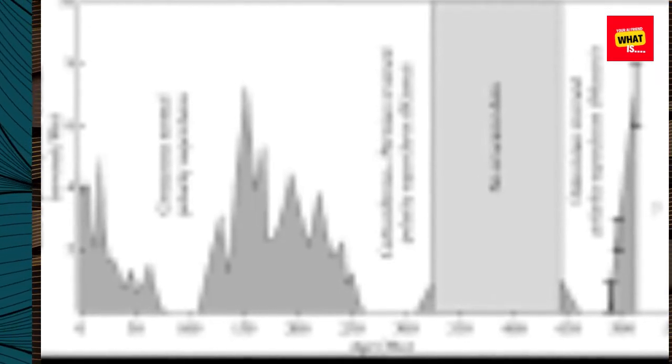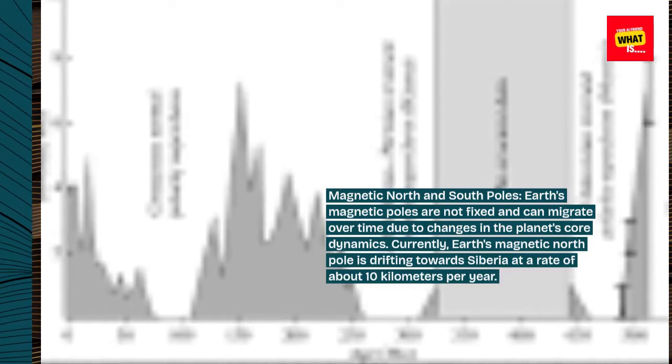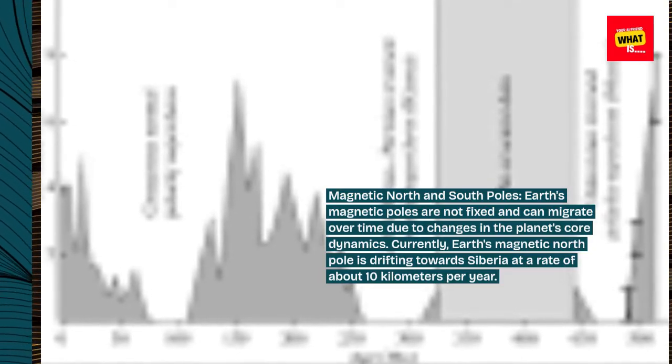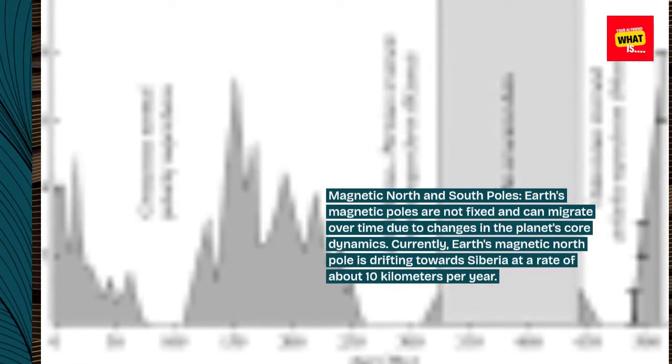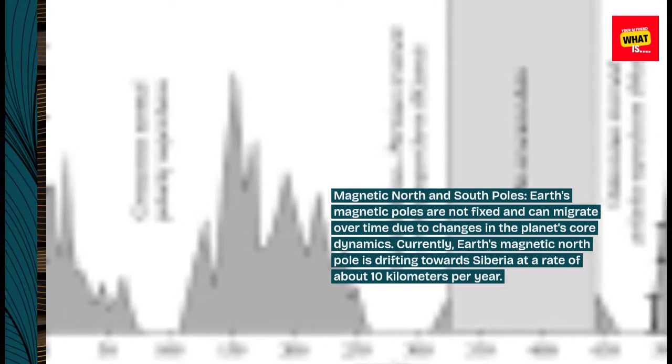Magnetic North and South Poles: Earth's magnetic poles are not fixed and can migrate over time due to changes in the planet's core dynamics. Currently, Earth's magnetic north pole is drifting towards Siberia at a rate of about 10 kilometers per year.